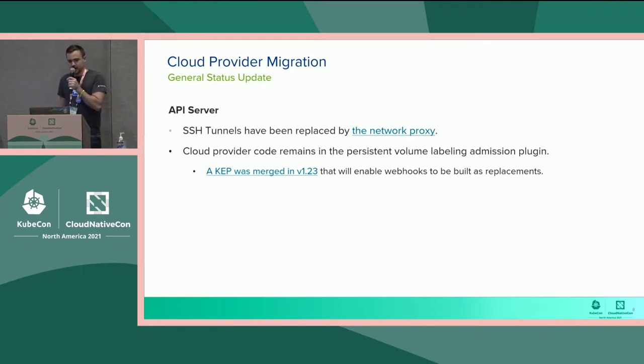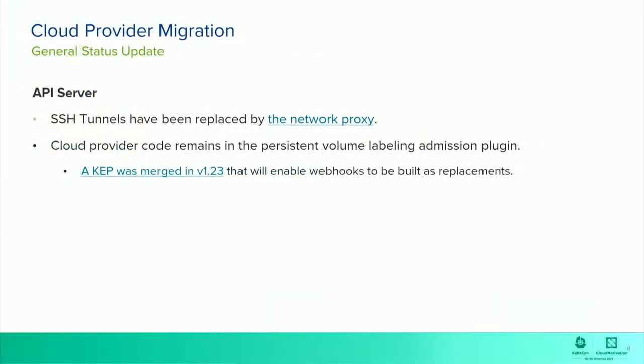The second area is the persistent volume labeling admission plug-in. Unfortunately, this is taking a little bit longer — it's probably going to be the long pull with extracting cloud provider-related code. Luckily, we did get a KEP merged in 1.23, which will make this migration a little bit easier. It's going to build some framework that allows cloud providers to build webhooks as a replacement for this admission plug-in.